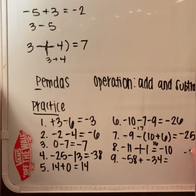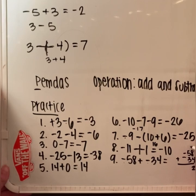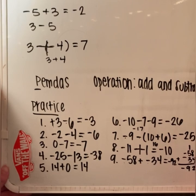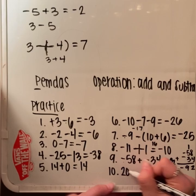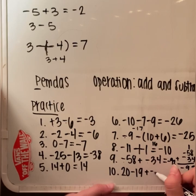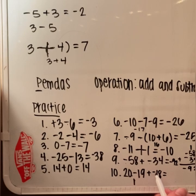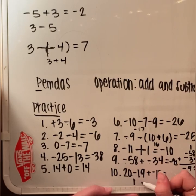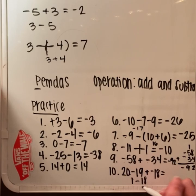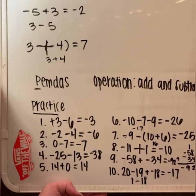Number 9: negative 58 plus negative 34. If we need to do our work on the side, we always can. We're going to combine because they have the same sign — it's going to be an addition problem of these negatives, giving us negative 92. Number 10: 20 minus 19 plus a negative 18. So 20 minus 19 is positive 1. When we see the plus and negative signs right next to each other, the negative overpowers the positive, so we rewrite it as negative 18. The difference between 1 and negative 18 is negative 17.